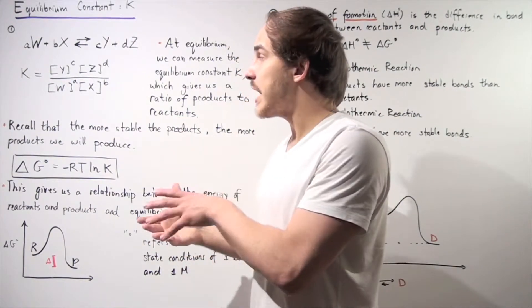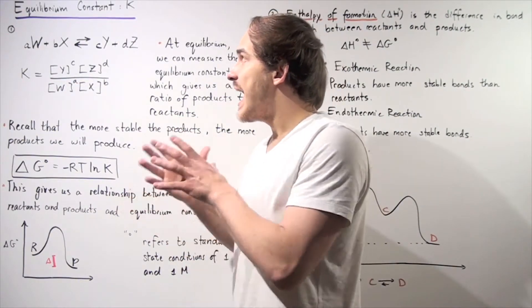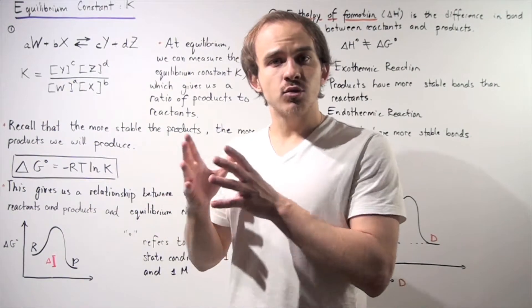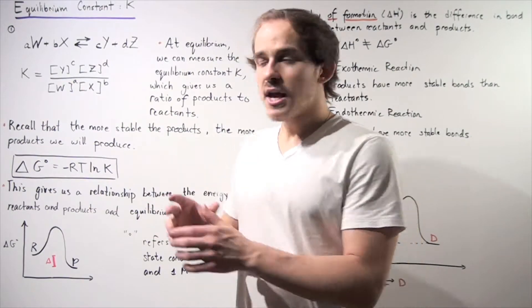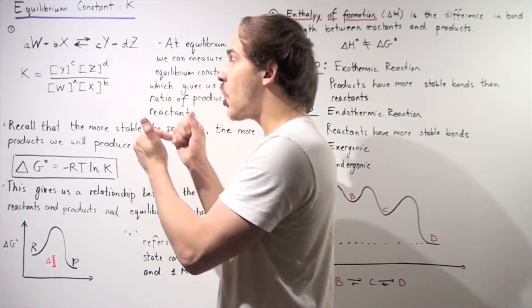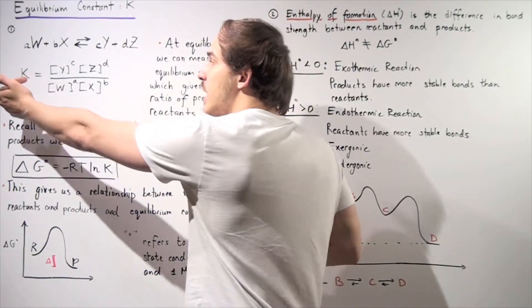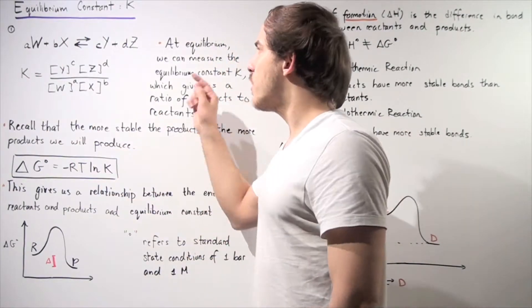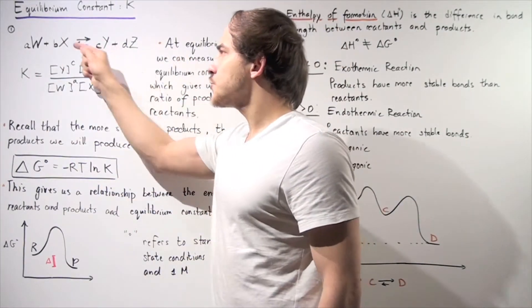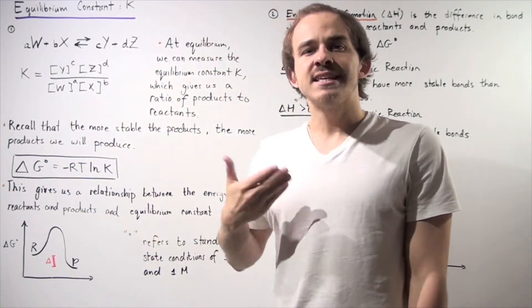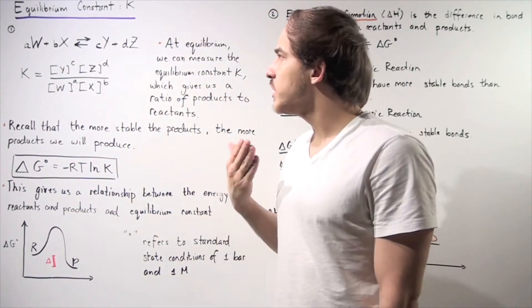At this point, our reaction has achieved equilibrium. At equilibrium, the two rates are equal — my forward rate is equal to my reverse rate — and this is known as chemical equilibrium.